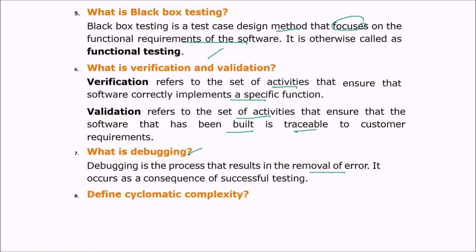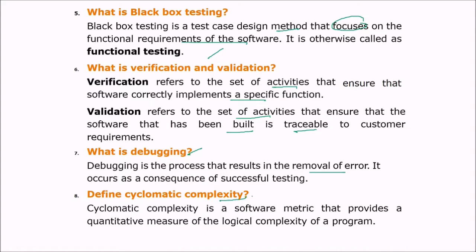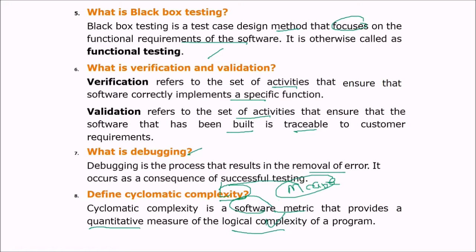Define cyclomatic complexity. What is cyclomatic complexity? Cyclomatic complexity is a software metric that provides a qualitative measure of the logical complexity of a program. McCabe introduced this metric originally to find out how complex a software or program is.